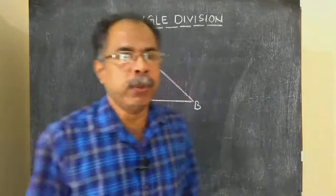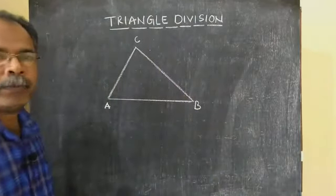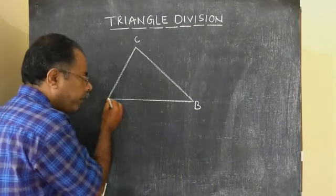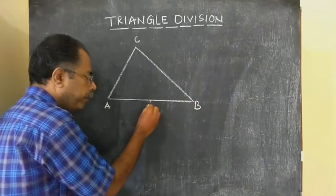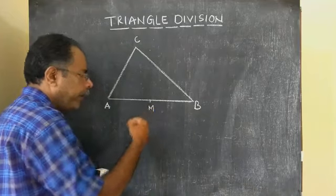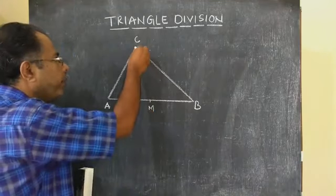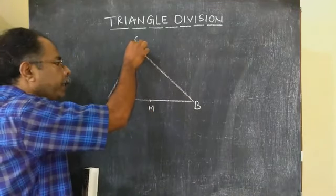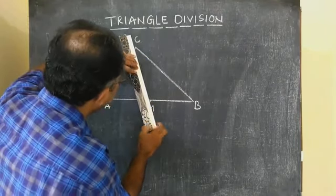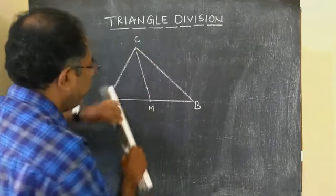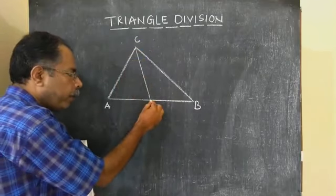This is the triangle ABC. I am marking the midpoint of the side AB. This is the midpoint of AB — let it be M. I am drawing a line from vertex C to M, joining C to M. I drew a line from vertex C to the midpoint of the opposite side.